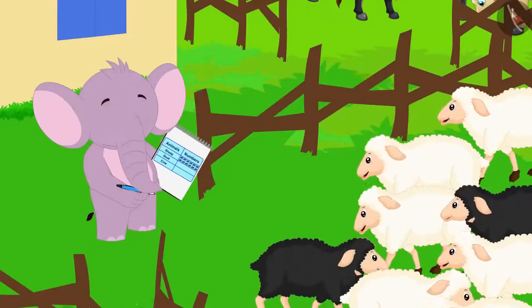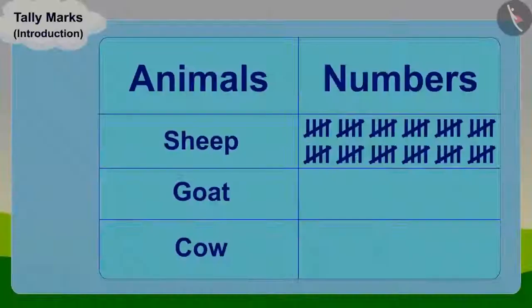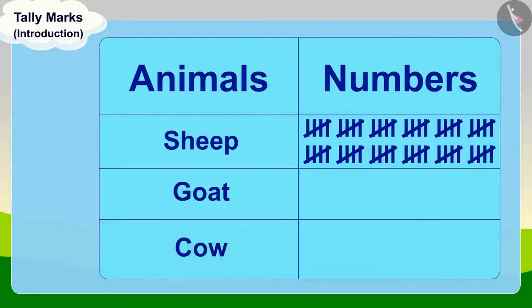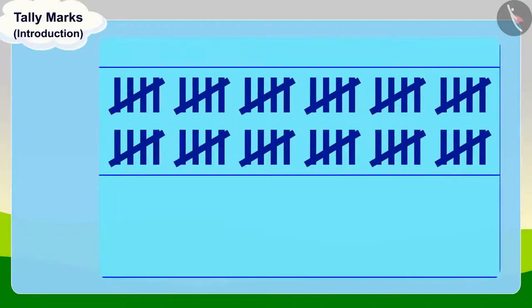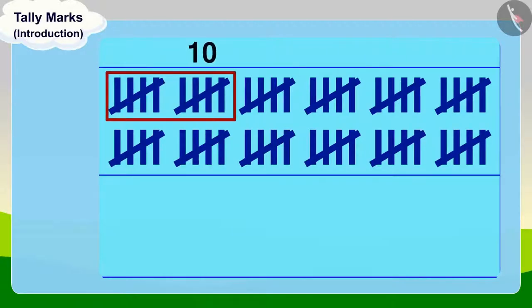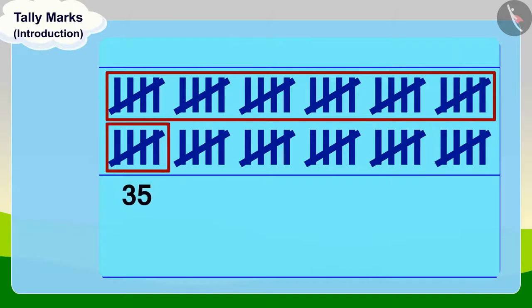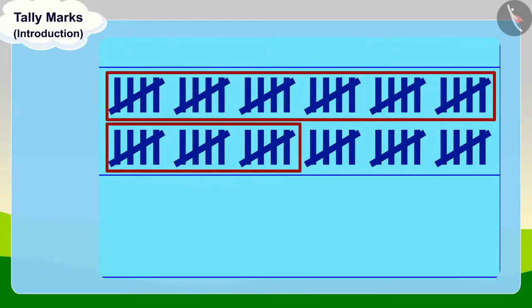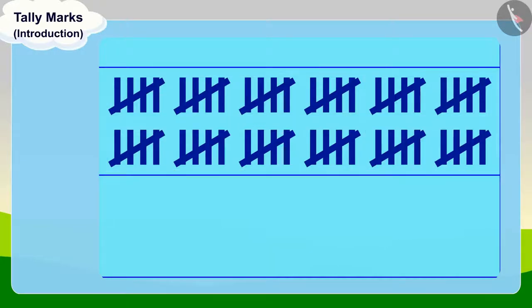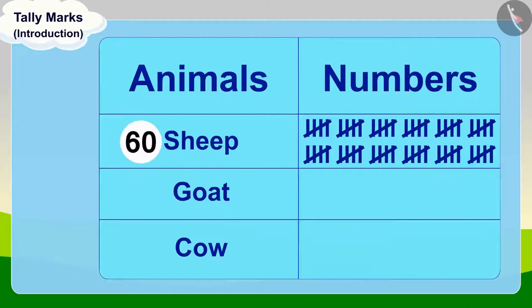Appu got very excited and immediately began counting those groups of five: five, ten, fifteen, twenty, twenty-five, thirty, thirty-five, forty, forty-five, fifty, fifty-five, and sixty. There are a total of sixty sheep.